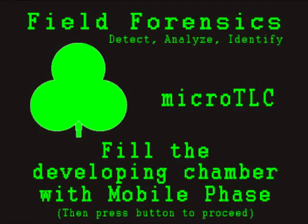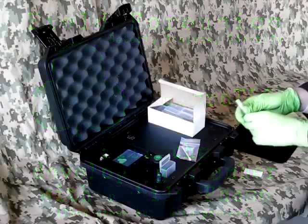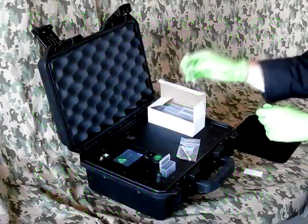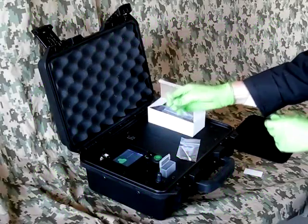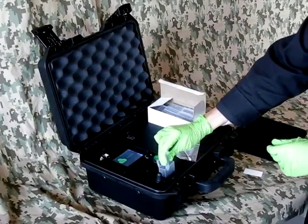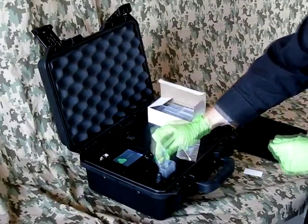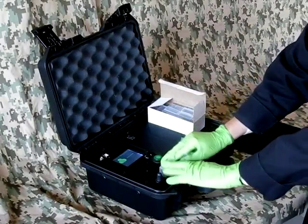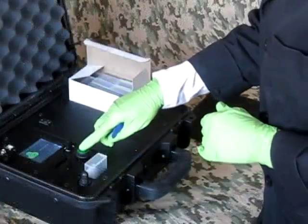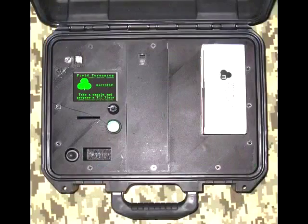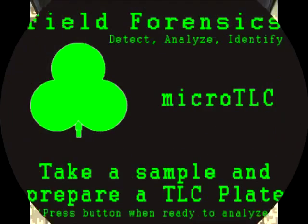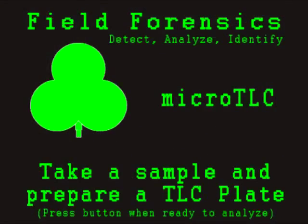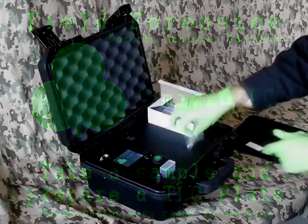Next, fill the developing chamber with mobile phase. Break the ampoule in the pen and squeeze the mobile phase into the chamber. Close the chamber and allow it to equilibrate while you prepare the sample and the TLC plate.